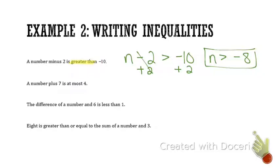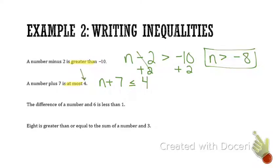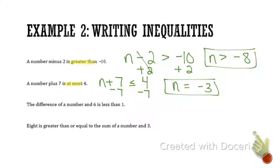A number plus 7 is at most 4. "At most" is one of those that might be a little more tricky. How would we write a number plus 7? Hopefully you're thinking n plus 7. If it's at most something, it means it can't go over that amount — so if you can be at most 4 years old to play on the playground, that value must be less than or equal to the cutoff value. Subtract 7 from both sides, and n is less than or equal to negative 3. On the writing ones, you'll be asked to write and solve, but you won't have to graph your solutions.